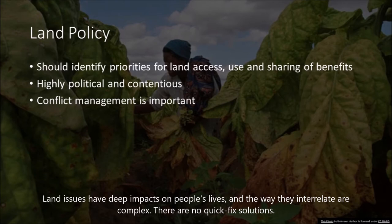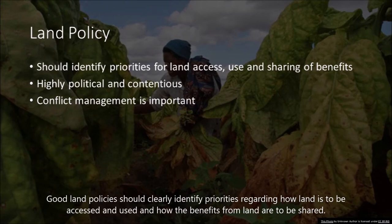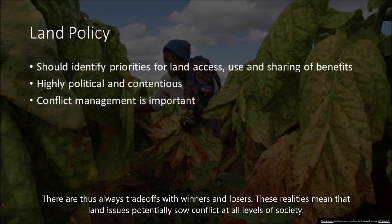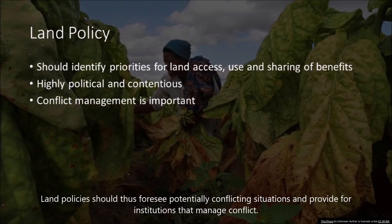Land issues have deep impacts on people's lives and the way they interrelate are complex. There are no quick fix solutions. Good land policies should clearly identify priorities regarding how land is to be accessed and used and how the benefits from land are to be shared. This makes land policy highly political and contentious because allocations of access and use of land involves choices about the distributional benefits from one of the country's main assets, which is land. There are thus always trade-offs with winners and losers, and these realities mean that land issues potentially sow conflict at all levels of society. Land policies should thus foresee potentially conflicting situations and provide for institutions that manage conflict.